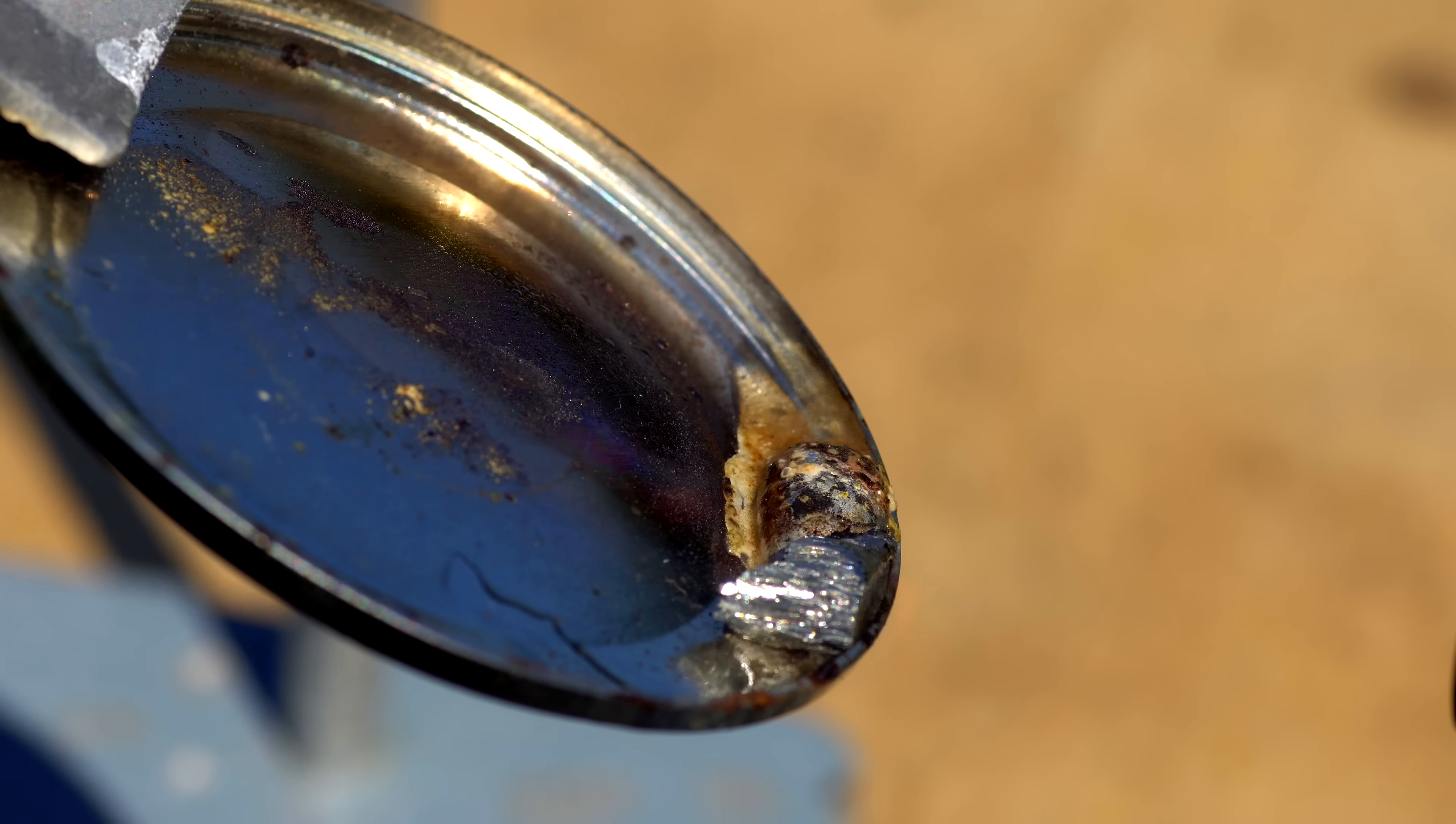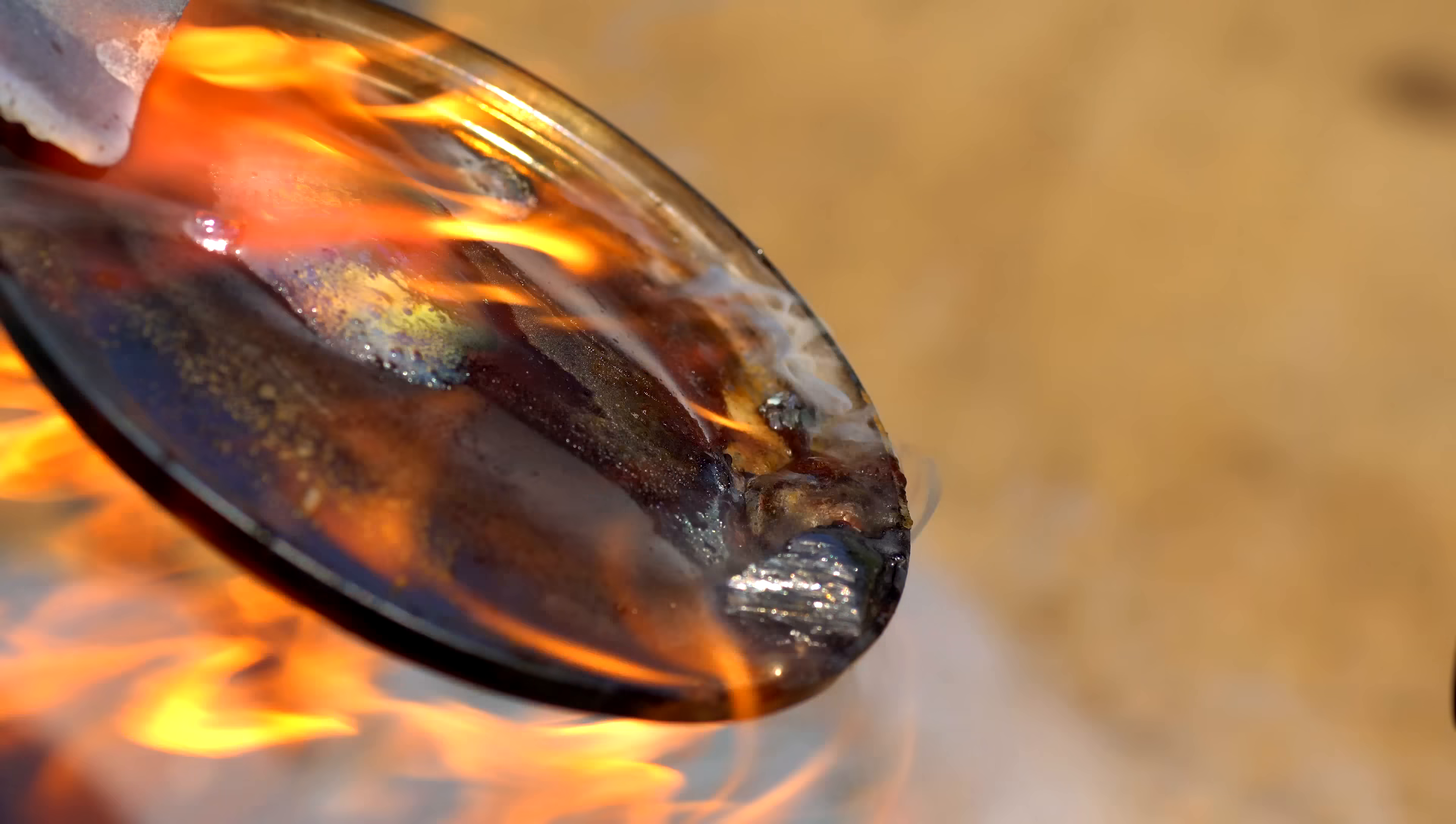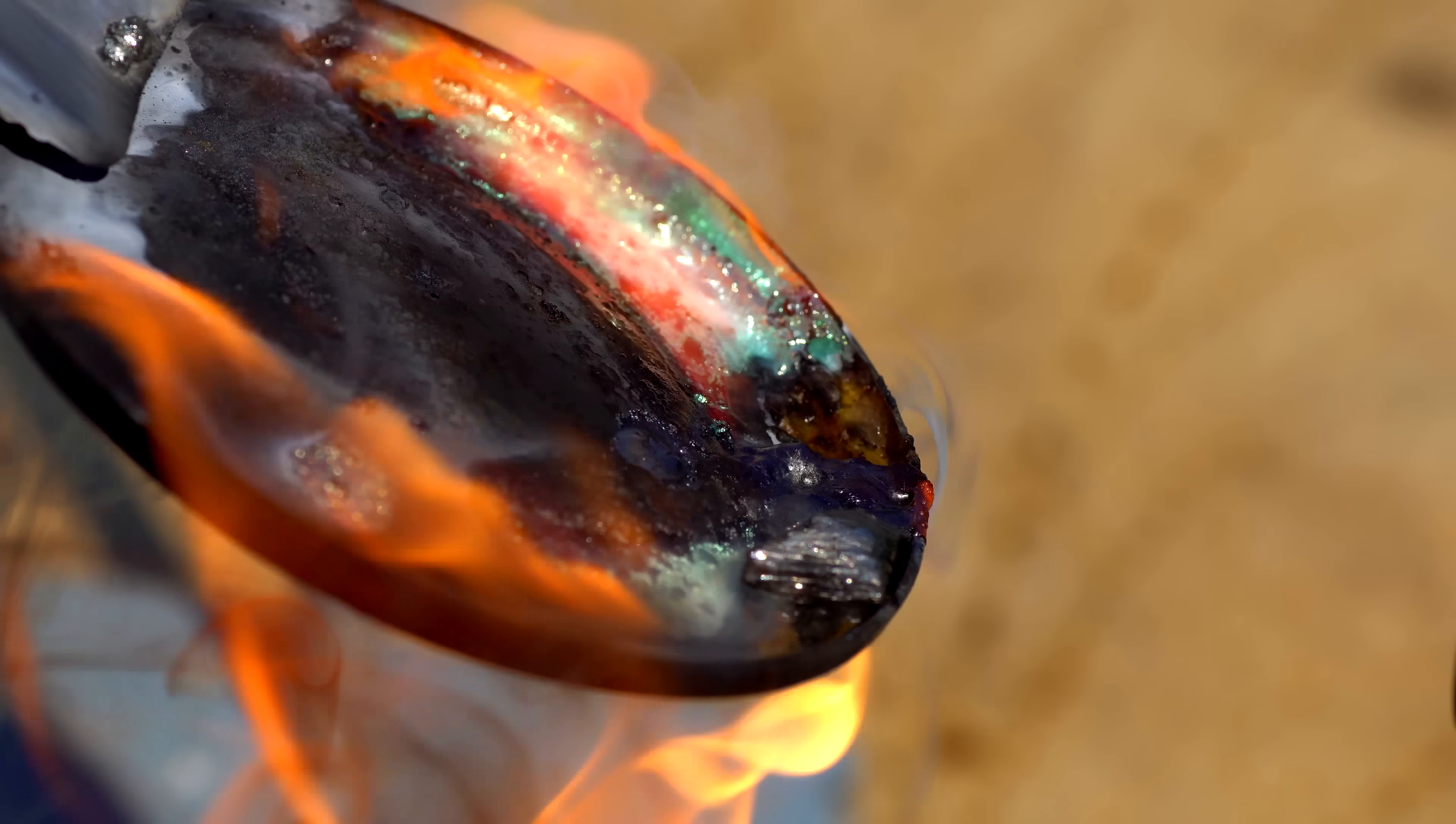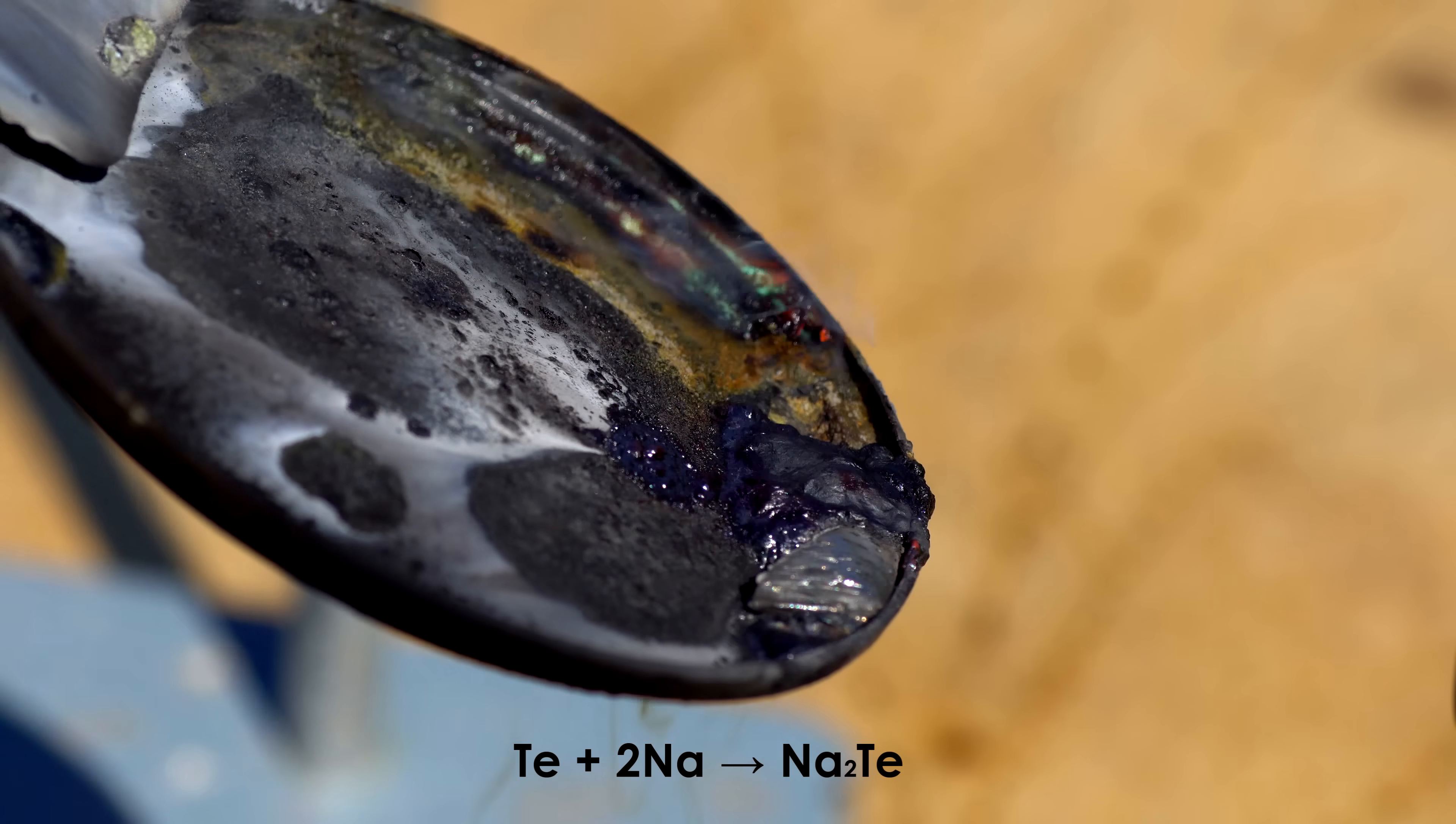Besides acids, tellurium also reacts with some metals. For instance, it reacts with sodium upon heating. This reaction produces sodium tellurite, a useful chemical for organic synthesis.